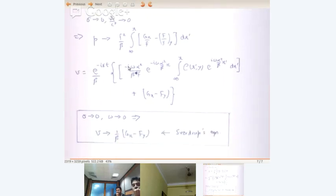When sigma and omega tend to 0, the first term just disappears, because you have an omega multiplying out here. And when that goes to 0, all you are left with is g x minus f phi by beta, or rather V is, beta into V is curl tau. That's the Sverdrup equation.